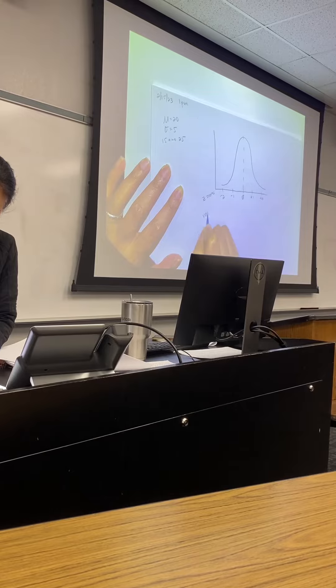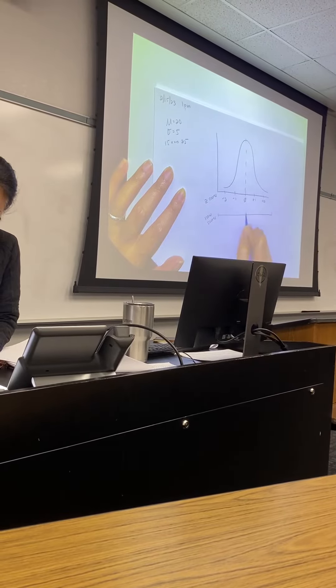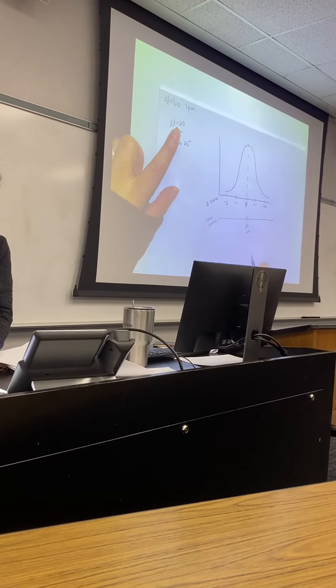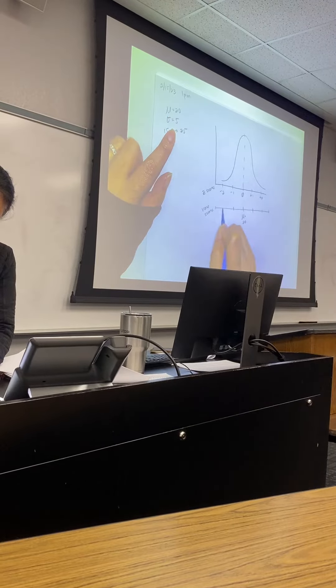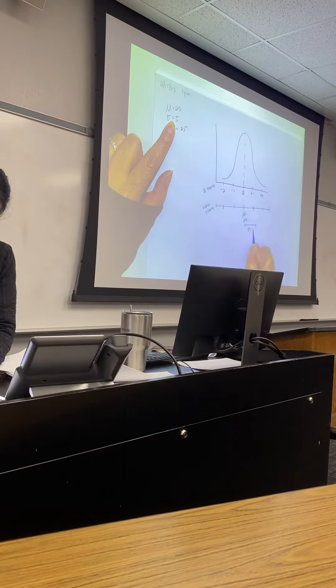We have the raw scores. Here we have mu, and mu is equal to 20. That's a population mean. Then we have the standard deviation, sigma is equal to 5. So we have 25,